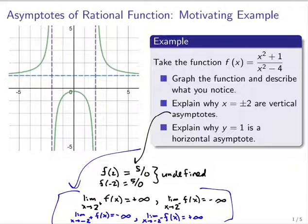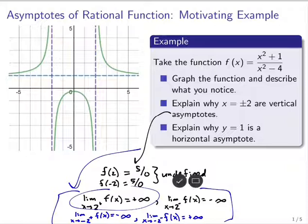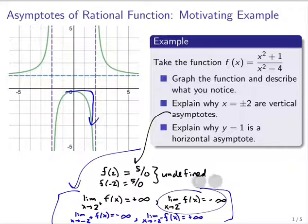It's because the function's approaching plus or minus infinity around those values, and in this case those are the four limits we would see around these asymptotes. As I approach two from the right, I see the function shoot up towards positive infinity. And as I approach two from the left, I see the function shoot down to negative infinity, and similarly for the other two.